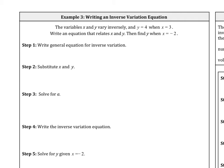Example 3, we're going to write an inverse variation equation. The variables x and y vary inversely, and y equals 4 when x equals 3. So the very first thing is we want to make sure that we write an equation that relates x and y. Very important that we don't forget that step.